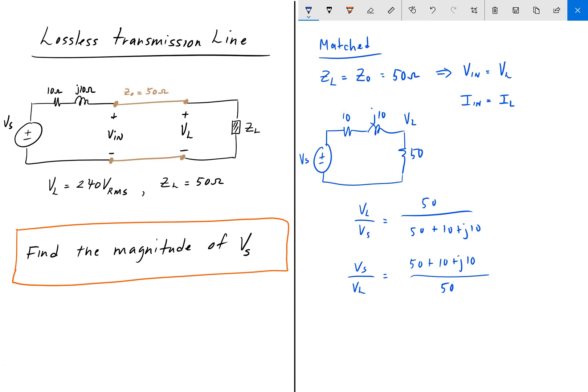I'm going to multiply both sides by Vl. That gives us Vs. The top here is going to be 60 plus J10 divided by 50, and we're going to multiply that by Vl which is 240. When you do that and turn it into polar coordinates, we get 291.97 volts. The angle is going to be 9.46 degrees.